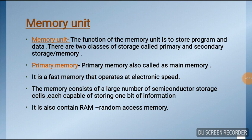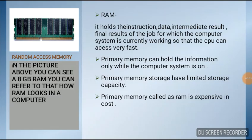Third category: Memory Unit. The function of the memory unit is to store programs and data. There are two classes of storage: primary and secondary. Primary memory, also called main memory, is a fast memory that operates at electronic speed. It consists of a large number of semiconductor storage cells, each capable of storing one bit of information. It contains RAM (Random Access Memory), which holds instructions, data, intermediate results, and final results of the current job so the CPU can access them very fast. Primary memory can only hold information while the computer is on, has limited storage capacity, and RAM is expensive.